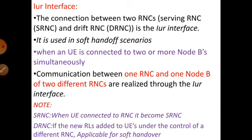What is the meaning of soft handover? When a user equipment is connected to two or more Node B stations simultaneously, that is the meaning of soft handoff mechanism. This IUR interface maintains a connection between one RNC and one Node B station, but this Node B station will belong to two different RNCs.